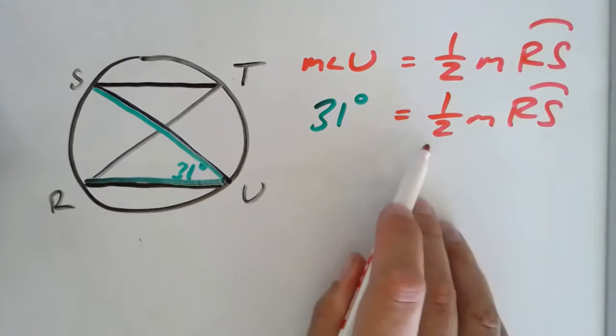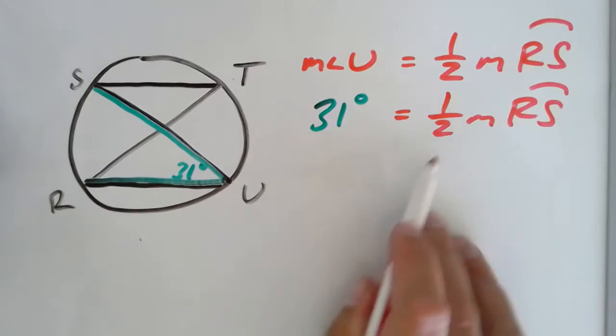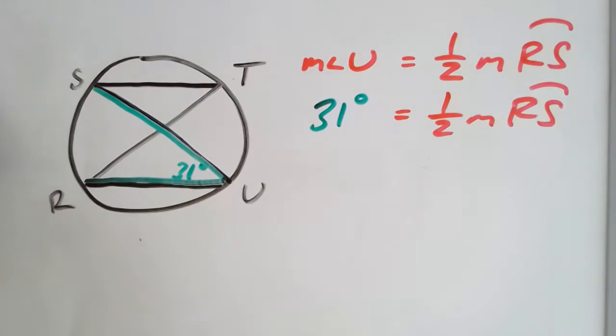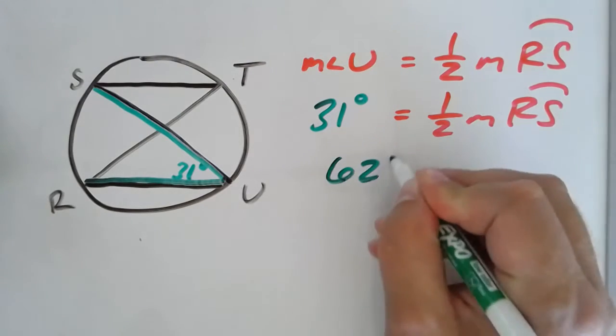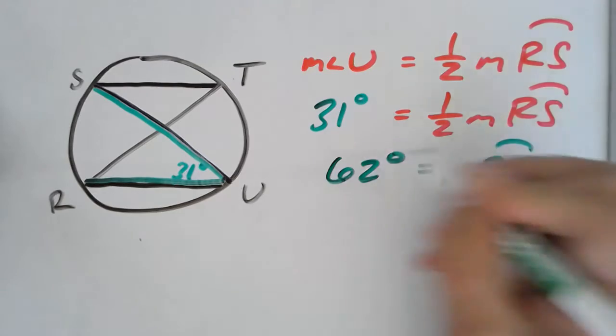And that's going to be one half of the intercepted arc. So if I want to solve for this intercepted arc, I want to divide both sides by one half, or another way to think about it would be to multiply both sides by two. And so that's really the only calculation here. Multiply 31 degrees by two. Measurement of arc RS is 62 degrees. Done.